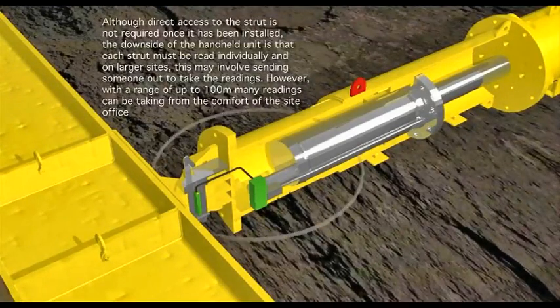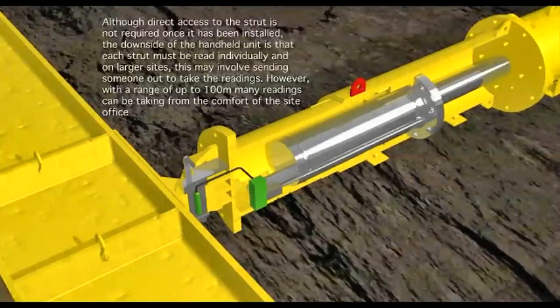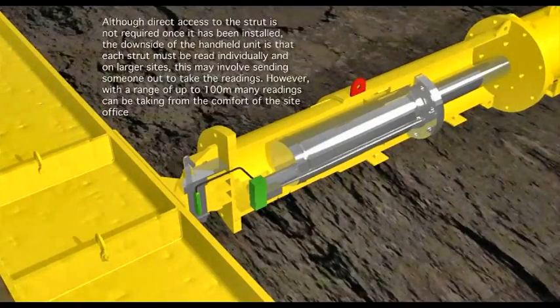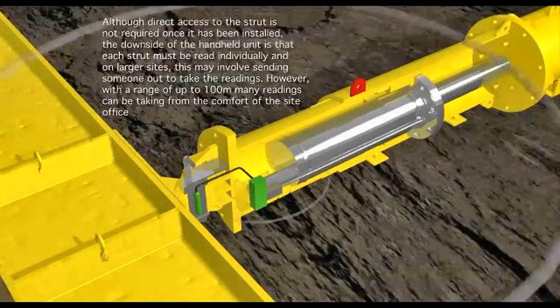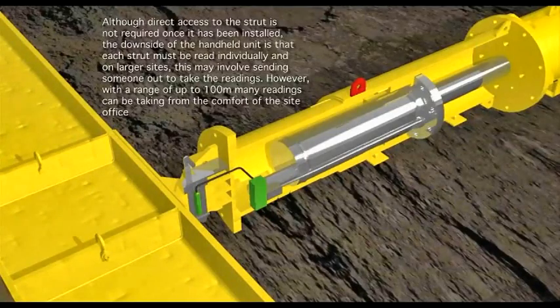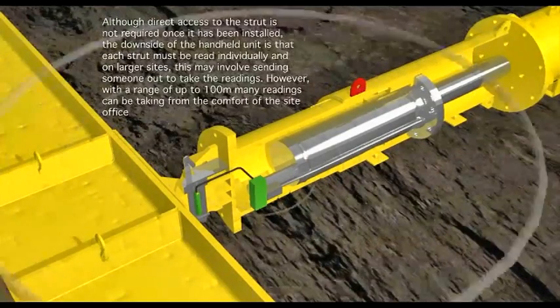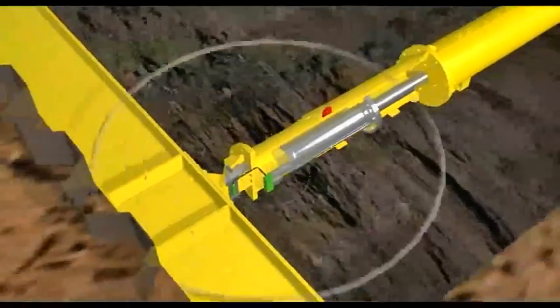Although direct access to the strut is not required once it has been installed, the downside of the handheld unit is that each strut must be read individually, and on larger sites this may involve sending someone out to take the readings. However, with a range of up to 100 meters, many readings can be taken from the comfort of the site office.